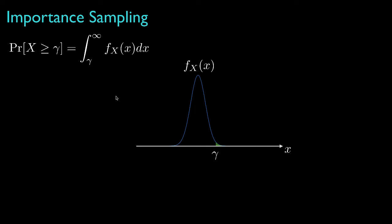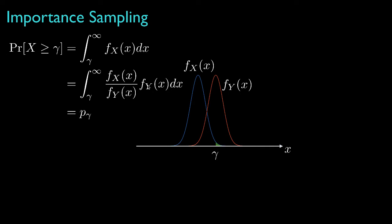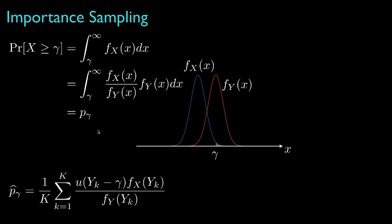To see how this might be done, let's go back to the definition of the tail probability as an integral of the density function from the threshold gamma to infinity. We rewrite this integral by multiplying and dividing by some other density function, f sub y, such that the probability it would produce a random variable in the tail of the original distribution is large — about one-half in this figure. The idea is to simulate several realizations of the random variable y with this auxiliary density, and then average the ratio of f sub x to f sub y times the unit step function, which filters for realizations that exceed threshold gamma.